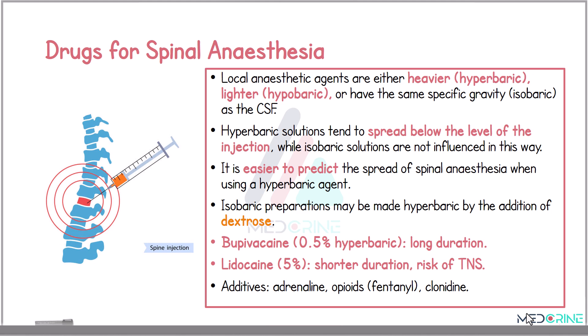What are the drugs that we use for spinal anesthesia? Local anesthetic agents used in spinal anesthesia are either heavier or lighter. Heavier anesthetic agents are known as hyperbaric agents, and lighter agents are known as hypobaric agents. In some instances, these agents could have the same gravity as the cerebrospinal fluid, which we call isobaric.